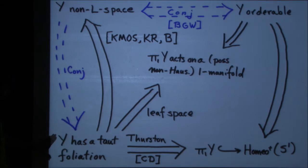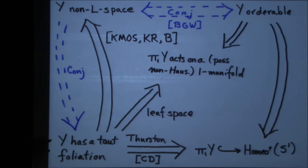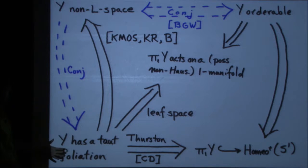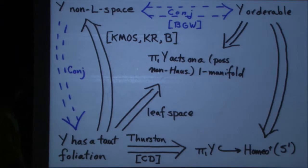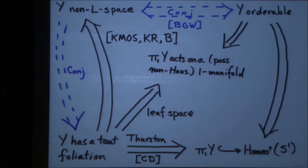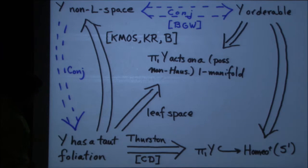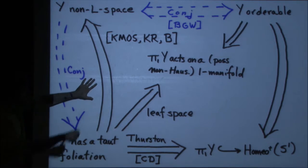Let me try to outline some of the connections that are known between these objects. The only implication amongst those three allegedly equivalent things that is currently known is that if you have a taut foliation, then your manifold is not an L-space. This goes back to work originally in a slightly different Floer homology by Kronheimer, Ozsváth, and Szabó, where you use the taut foliation to build a pair of contact structures by the work of Eliashberg-Thurston, or in this degree of smoothness, Kazez-Roberts and Bowden, to build some nice contact structures and engage with the gauge theory.